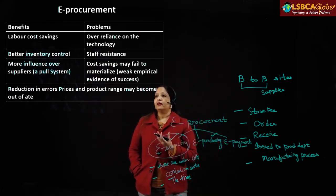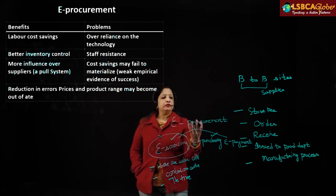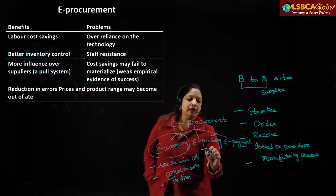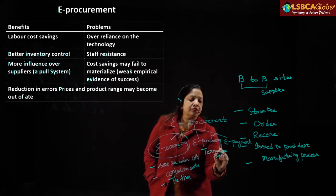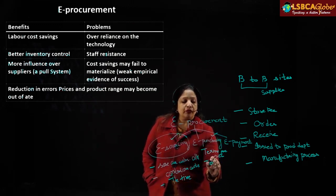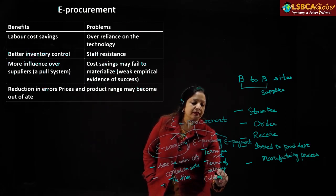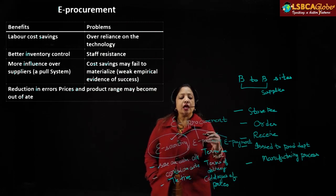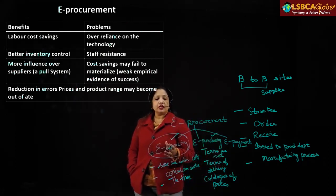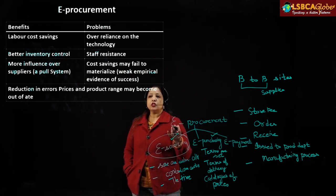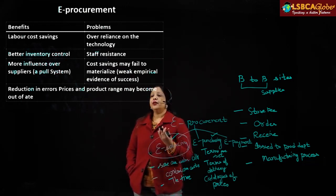The second stage is e-purchasing. Once a supplier is chosen, we place the order and purchase from them. During e-purchasing, the terms are set — terms regarding how to pay, terms of delivery, the catalog of prices is shared, and discussions regarding the quality of products take place.